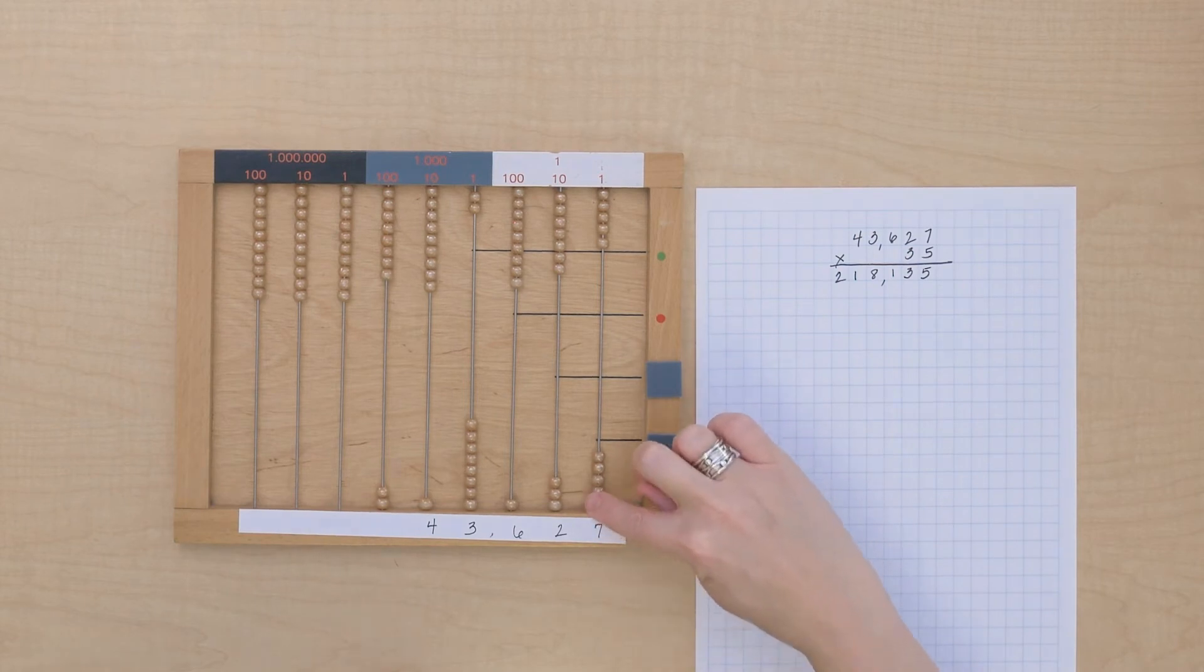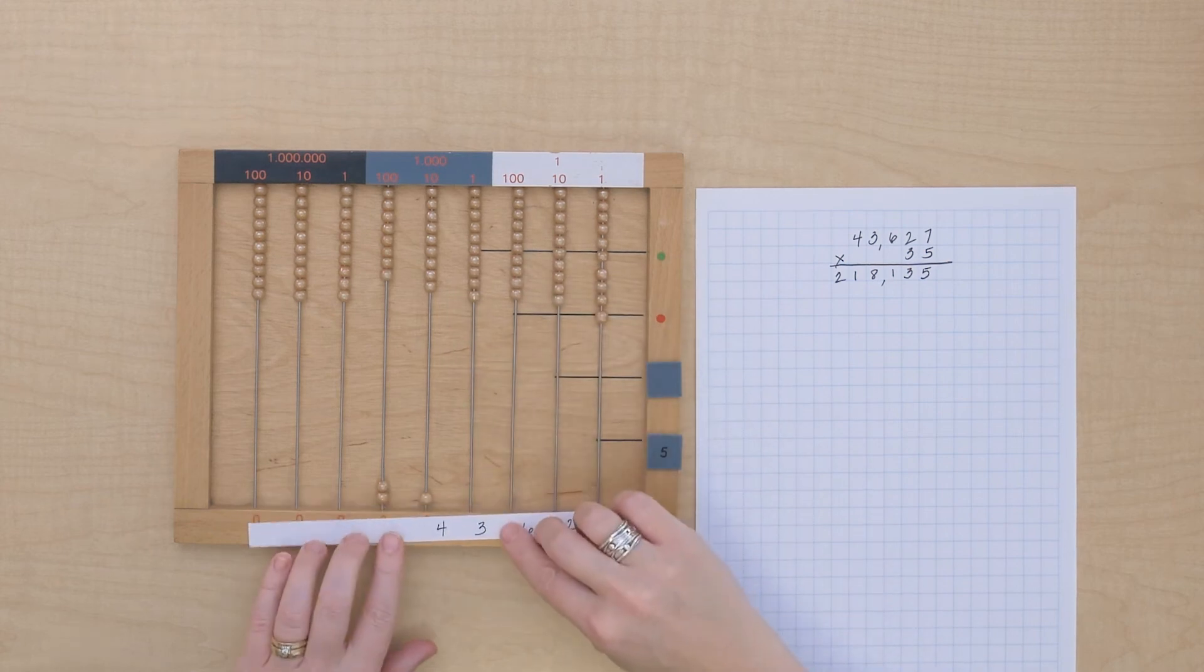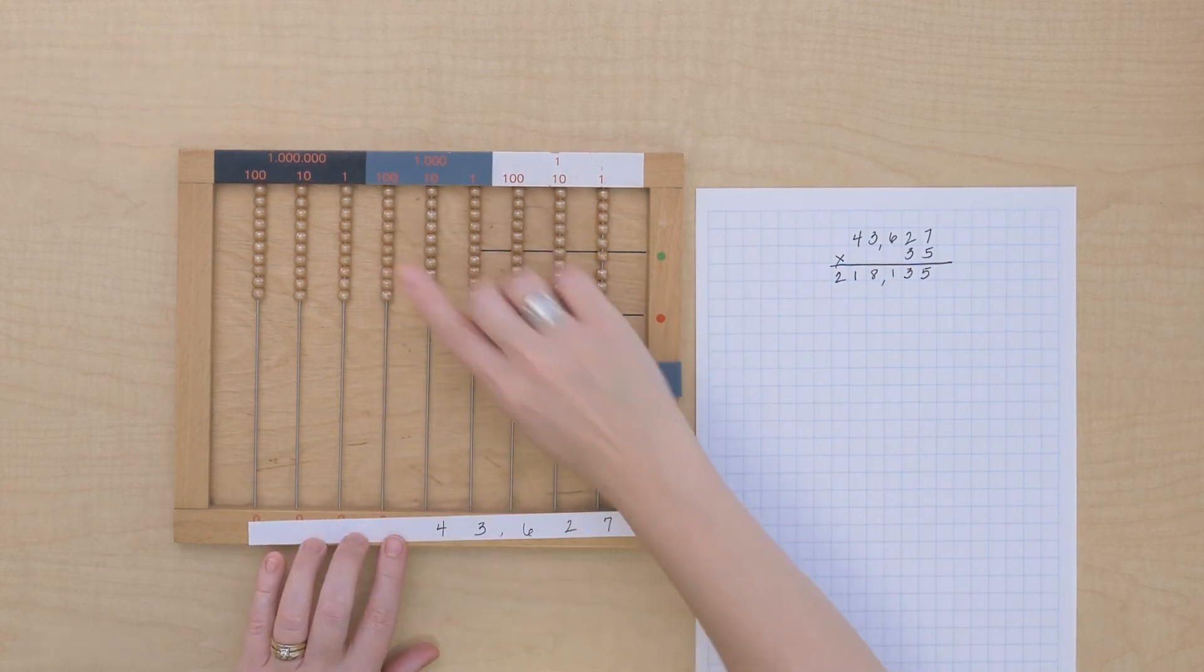Now, instead of keeping this value on the frame, I'm going to put it back because I want us to find out just the value of the tens multiplication.